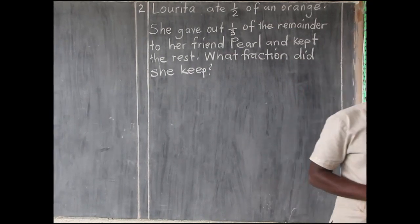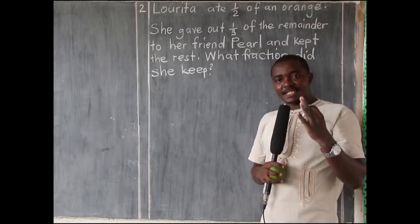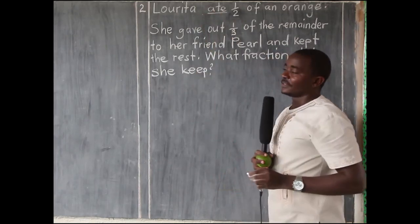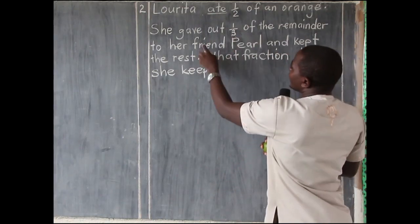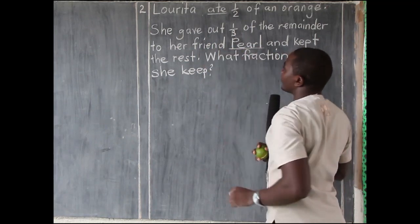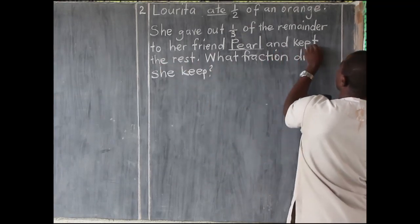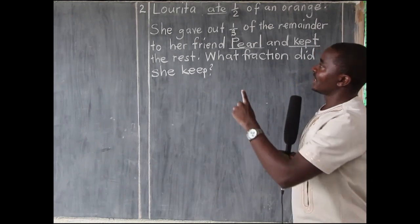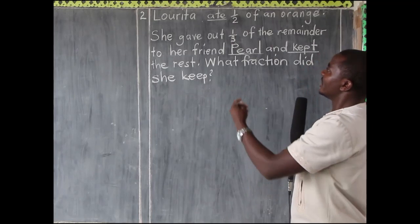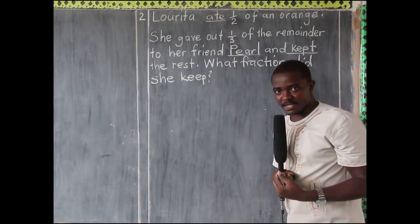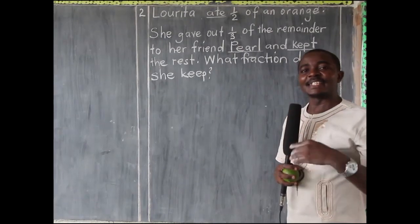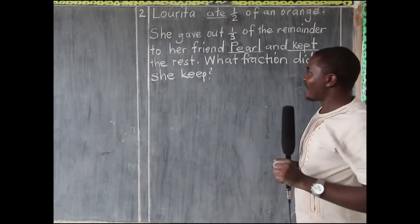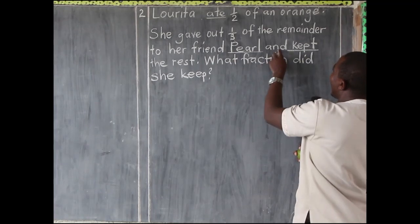Something we must understand is that there are three things in this question: the fraction Rolita ate — that is number one; the fraction she gave to her friend Pearl — that is number two; and the fraction kept — that is number three. We need to find all three.